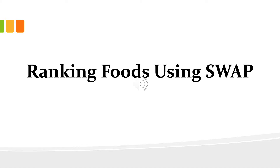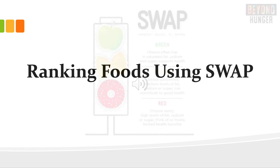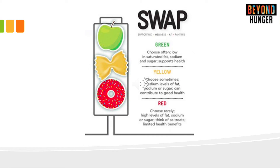We're going to learn how to rank foods using SWAP. As a reminder, the three nutrients that we are looking at are sodium, saturated fat, and sugar.